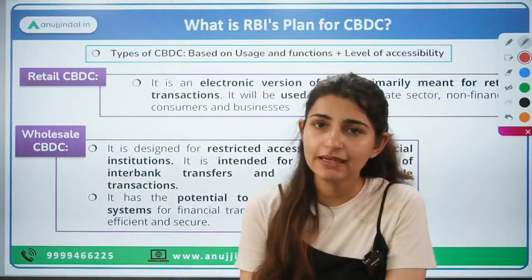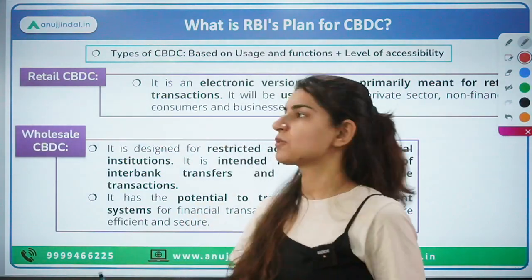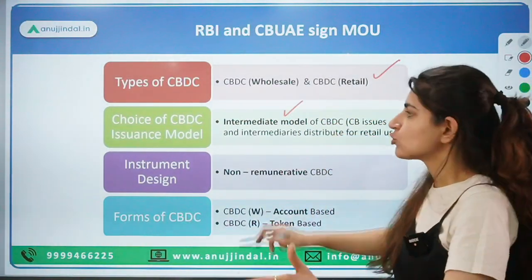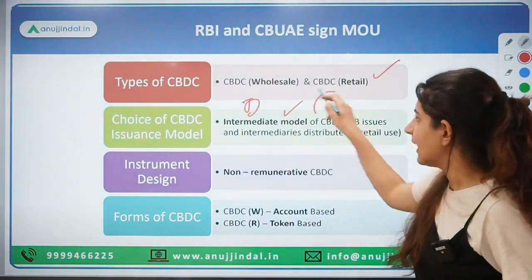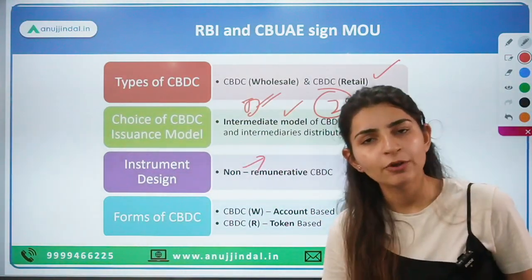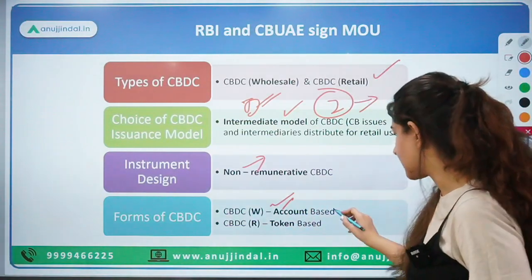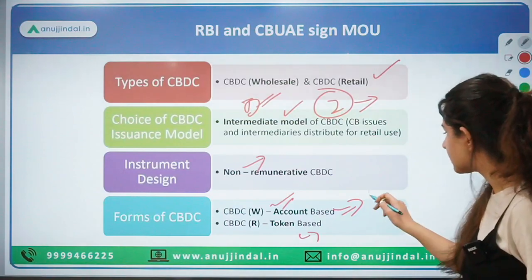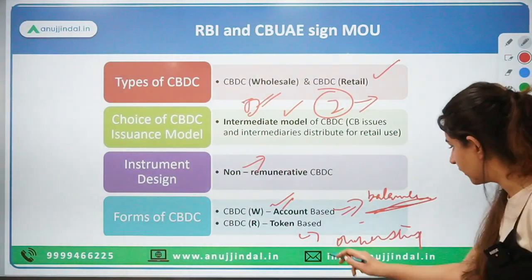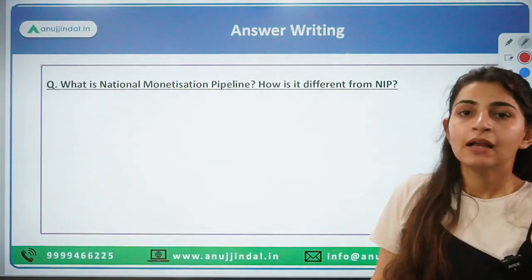This brings us to the end of the first topic. We discussed what CBDC is — very important for your exam, with a high chance a question will come, either objective or descriptive. To recapitulate: types of CBDC are wholesale and retail; choice of CBDC issuance is direct or indirect mode. Direct mode — RBI performs all functions; indirect mode — there is an intermediary involved. CBDC is non-remunerative — no interest, just like paper currency. Forms: wholesale is account-based where balances are maintained; retail is token-based where ownership is of the amount held.